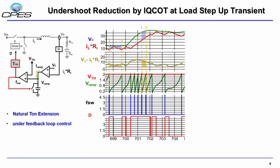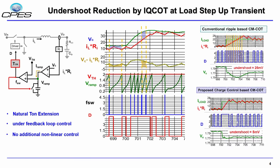The extension of T-on is always under the feedback loop, so there is no chance of over-correction. Another advantage is that it does not use any external nonlinear block to perform this T-on extension. As you can see in the bottom picture, the extended T-on can reduce the undershoot by 20 millivolts.